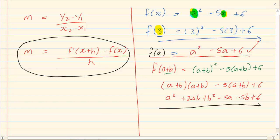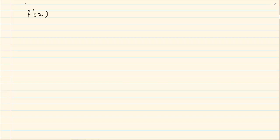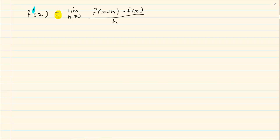Now how do we go about doing the first principle? You need to write the formula down correctly. The gradient f'(x) equals the limit as h tends to zero of [f(x+h) − f(x)] over h. In the matric exam you get a mark for writing it correctly — an equals sign in the wrong place or omitting the limit will be penalized. If unsure, go to your formula sheet.